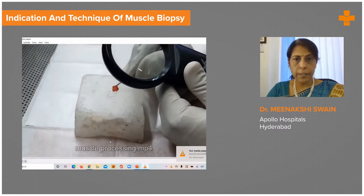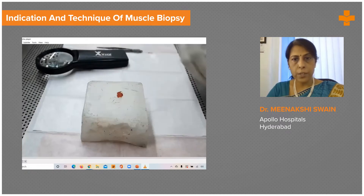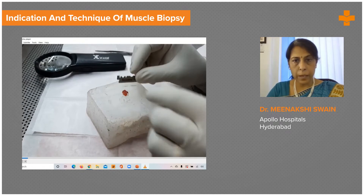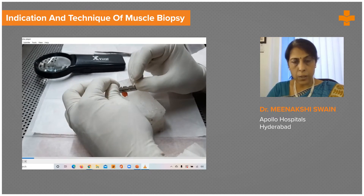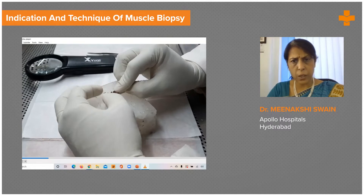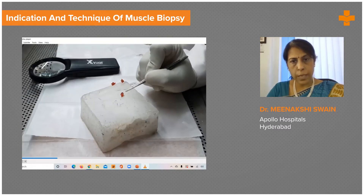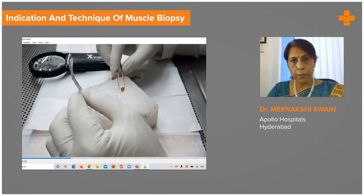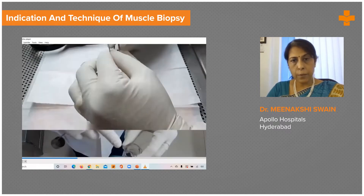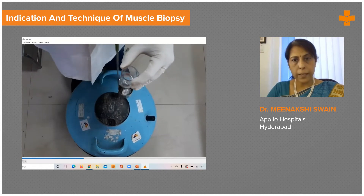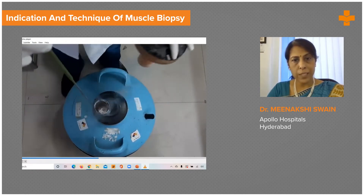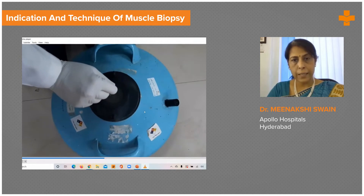Once the muscle is received in the lab, under a hand lens or dissecting microscope, the orientation is assessed. It's oriented so that the longitudinal fibers are visible in one plane, and with a sharp blade a cut is made transversely, because transverse sections yield the maximum information. The biopsy is then placed on a silver foil, which is frozen in liquid isopentane cooled in liquid nitrogen at a temperature as low as minus 170 to minus 180 degrees Celsius. The canister is lowered into the can, and on contact you can see fumes coming up, indicating it has made contact.